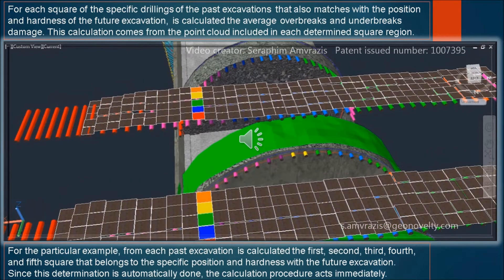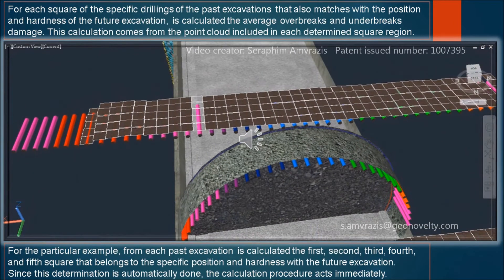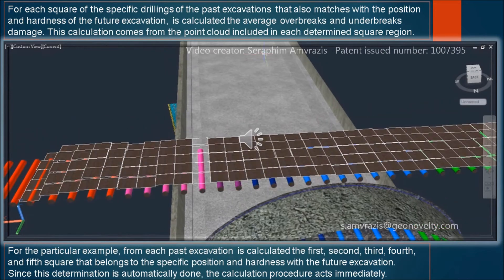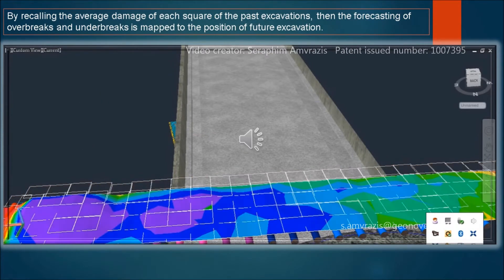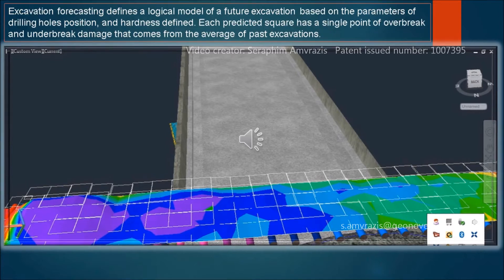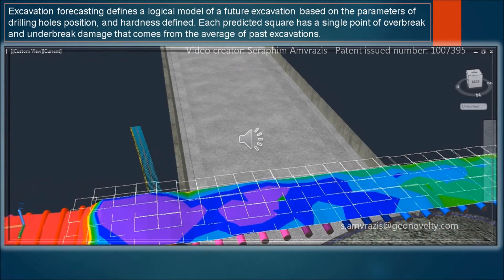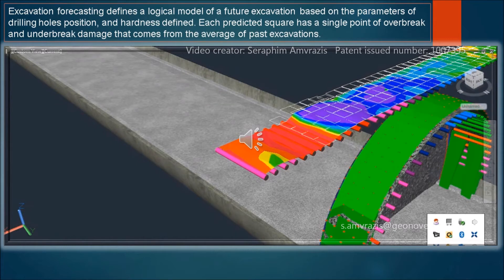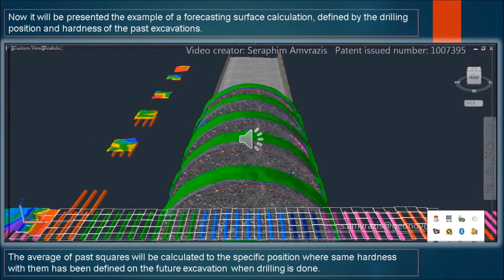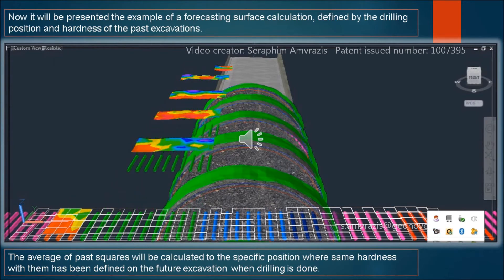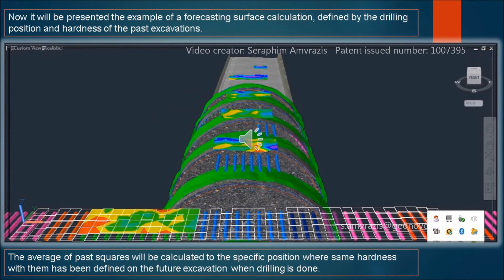Since this determination is automatically done, the calculation procedure acts immediately. By recalling the average damage of each square from the past excavations, the forecasting of overbreaks and underbreaks is mapped to the position of the future excavation. Excavation forecasting defines a logical model of a future excavation based on the parameters of drilling hole position and hardness defined. Each predicted square has a single point of overbreaks and underbreaks damage that comes from the average of past excavations. The forecasting surface calculation is defined by the drilling position and hardness of the past excavations, and the average of past squares is calculated to the specific position where the same hardness has been defined on the future excavation.